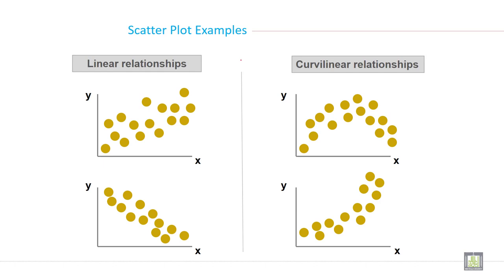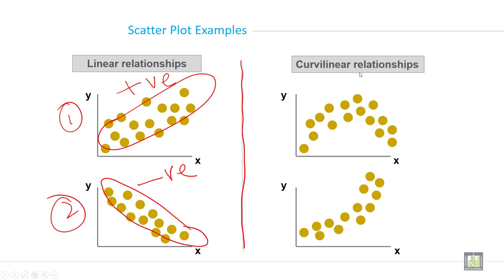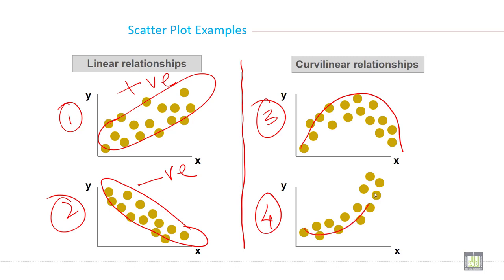Here on the left side, the first and second diagrams show a linear relationship. This is an example of a positive relationship because it is going in an upward direction. This is an example of a negative relationship — it goes in a downward direction. The right side shows a nonlinear, or curvilinear, relationship — it is like a curve, not a straight line.